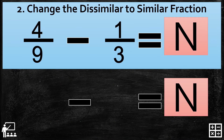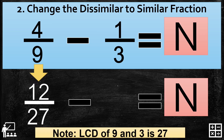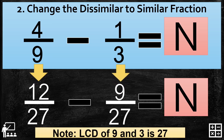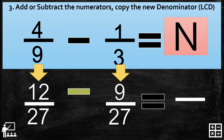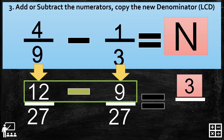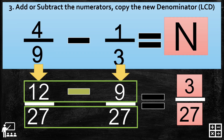Let's proceed to step 2: change the dissimilar to similar fractions. So 4 over 9 and 1 third need to become similar fractions with the new denominator of 27. So 4 over 9 becomes 12 over 27, and 1 third becomes 9 over 27. Step 3: subtract the numerators and copy the new denominator. 12 minus 9 gives you 3, and we copy the denominator 27. Our answer is 3 over 27.